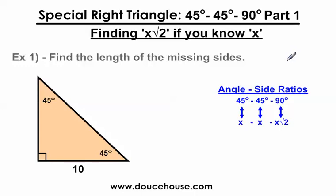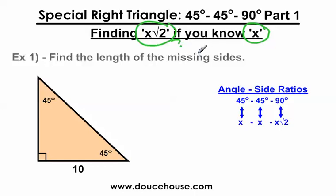Hello everybody, how you doing? This is Mr. Douse. On this video I'm going to talk about the 45-45-90 right triangle. This is part one. Now if you haven't seen my basic video on special right triangles, you might want to watch that one before you watch this one. But on this video, I'm talking about what if you know what x is on the triangle, but you do not know what x square root 2 is on the 45-45-90 triangle. I'm just going to do three example problems.